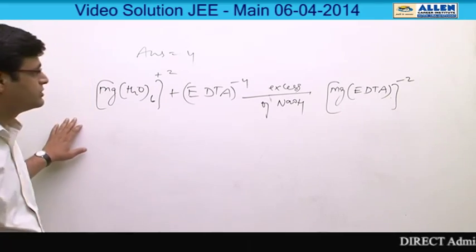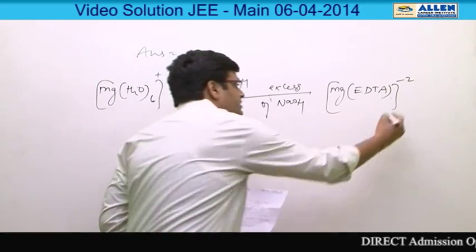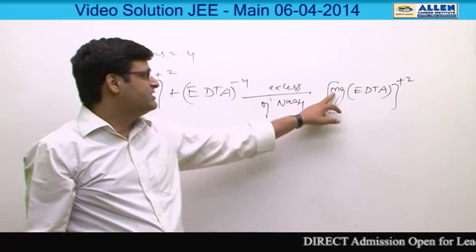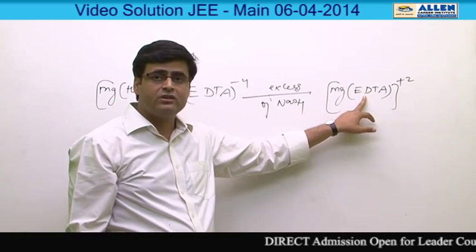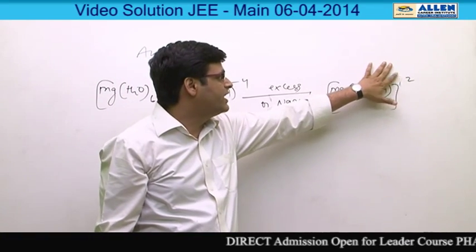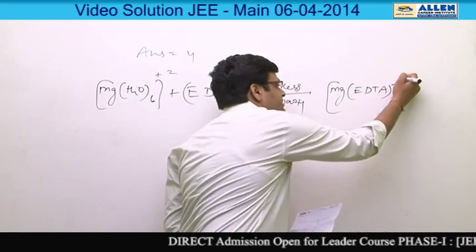This reaction in the given question is incorrect because in this reaction, here is +2, and if magnesium is +2 and EDTA is -4, then here will be -2. That is why this reaction is wrong.